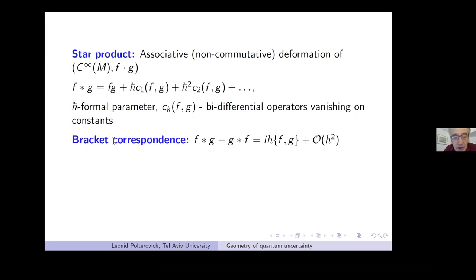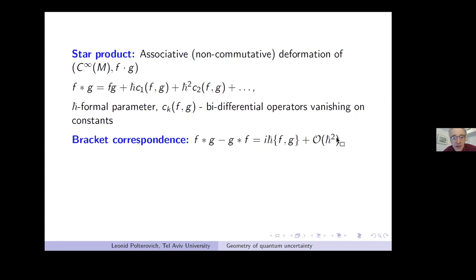There is one restriction — the bracket correspondence: the commutator of functions with respect to this operation is i times h-bar times the Poisson bracket, plus terms of higher order in h-bar. When I write C^∞(M) I'm thinking simultaneously of real and complex valued functions, and the operation is complex linear.